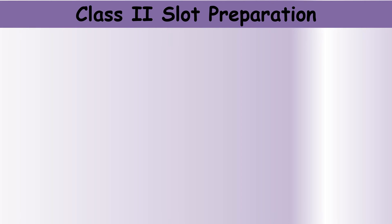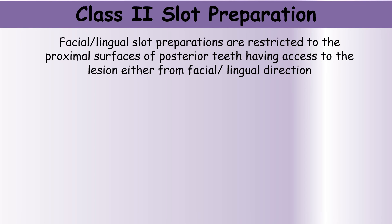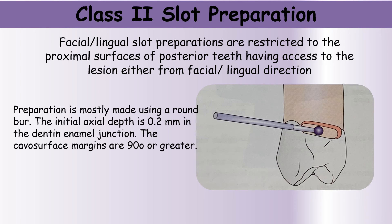The fourth type is the class 2 slot preparation. Facial and lingual slot preparations are restricted to the proximal surfaces of posterior teeth, with access to the lesion either from the facial or the lingual direction. We make this slot using a round burr; the initial axial depth is about 0.2 mm within the dentino-enamel junction, and the cavosurface margins are about 90 degrees or greater.